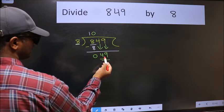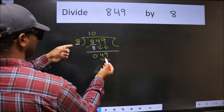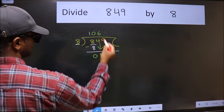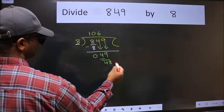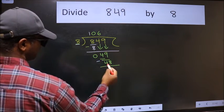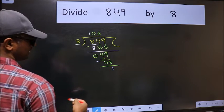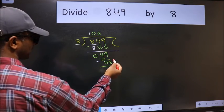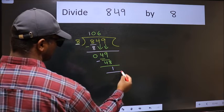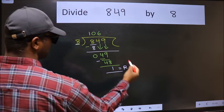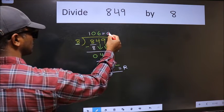Now 49. A number close to 49 in 8 table is 8 times 6 equals 48. Now we should subtract, we get 1. No more numbers to bring down, so we stop here. This is our remainder and this is our quotient.